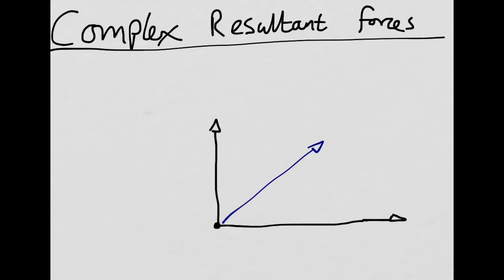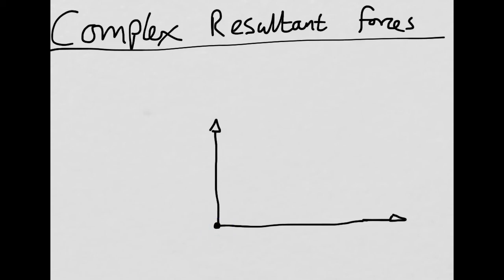Let's have a look and see how we can calculate it exactly. All you need to do is move one of the two forces so that they are top and tail. Currently they are tail to tail, so the two forces are tail to tail, but we want them top and tail. So I'm going to move this one on the right and put it so that it's now top and tail — like that.